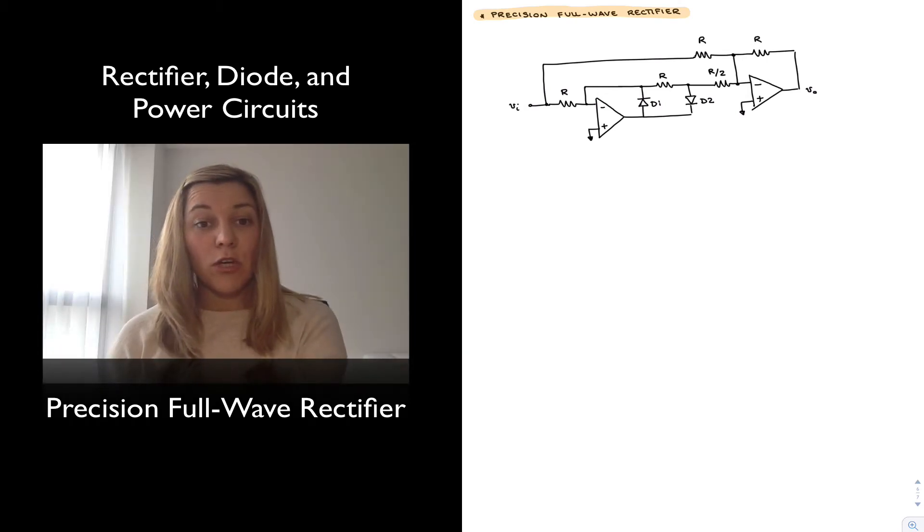And now we're going to take a look at a precision full wave rectifier circuit. I have drawn the circuit schematic and you can see that it consists of two op-amps, two diodes, D1 and D2, and a bunch of resistors.